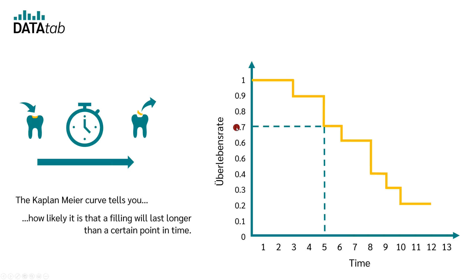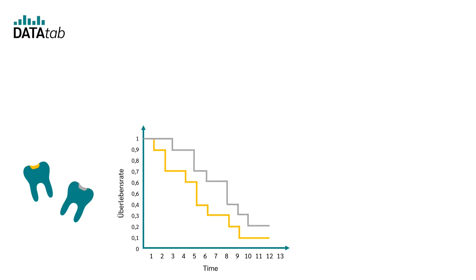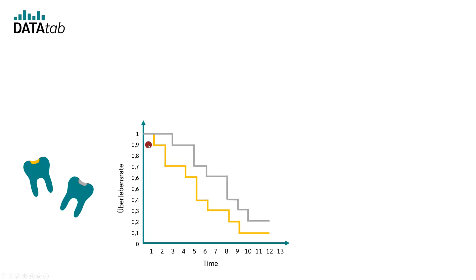At five years, the Kaplan-Meier curve gives a value of 0.7, so it is 70% likely that a filling will last longer than five years. Of course, the data are purely fictitious. If you are interested in how the Kaplan-Meier curve is created from existing data, please watch my dedicated video. But now you might be interested in whether this curve differs according to different filling materials — for example, whether one filling material is better than the other. The log rank test helps you with this task.